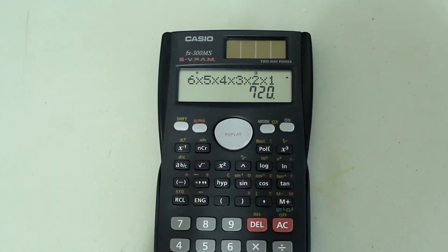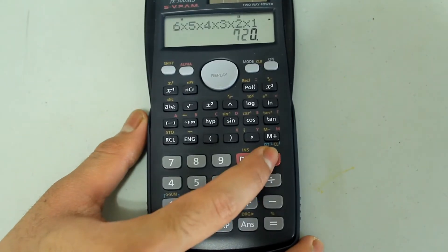And that is 6 factorial, but this method won't be useful for finding the factorial for larger numbers. Instead, let's clear this out first.